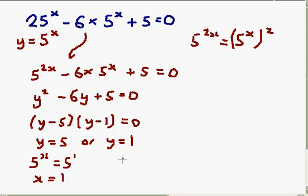If we have a look at y is equal to 1, then that means 5 to the x must be equal to 1. Remember from the first law of indices that if you've got 5 to the x is equal to 1, x must be equal to 0.